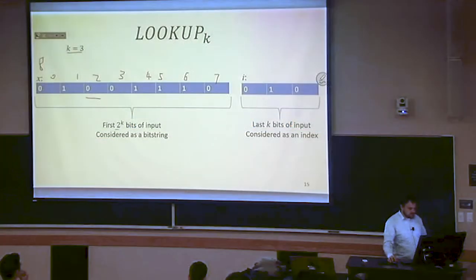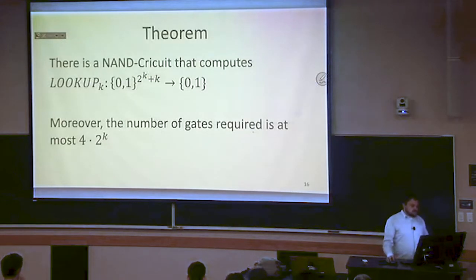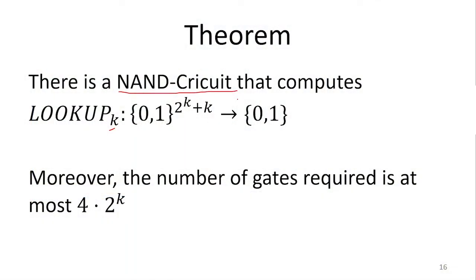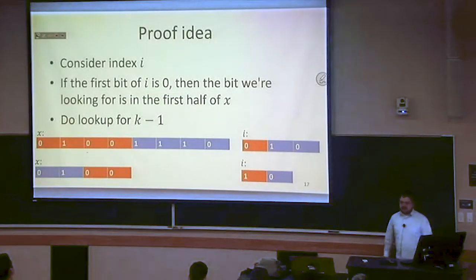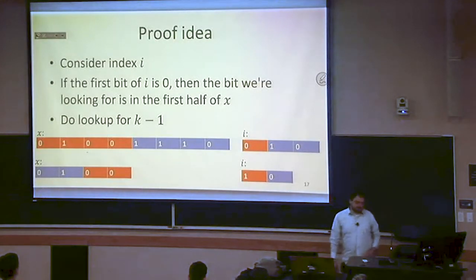The first 2 to the k bits of our input are the bit string we're indexing into; the last k bits are the index we're going to use to pick the bit. We're going to show that no matter what k is, we can always find a NAND circuit that computes lookup sub k, and also give a bound on the number of gates we'll need to do that.